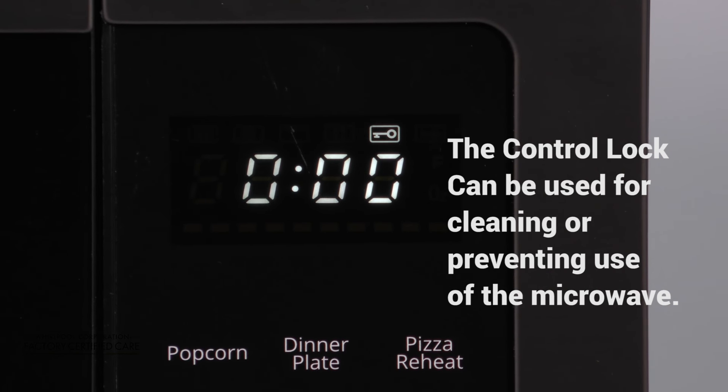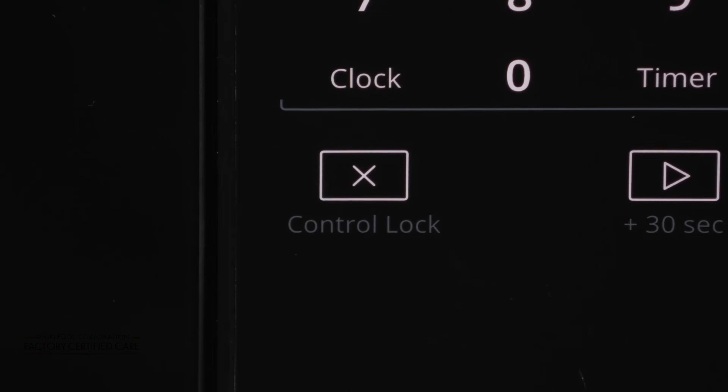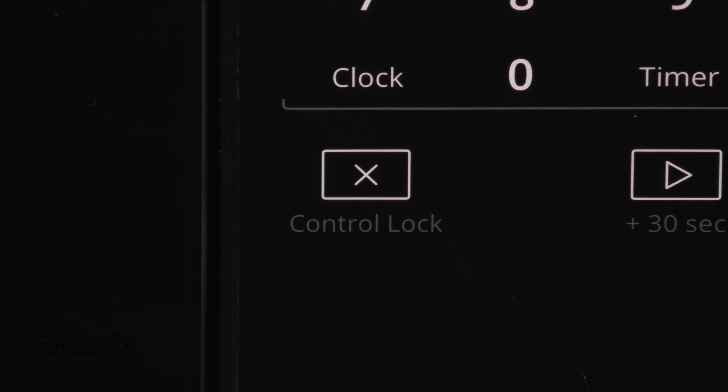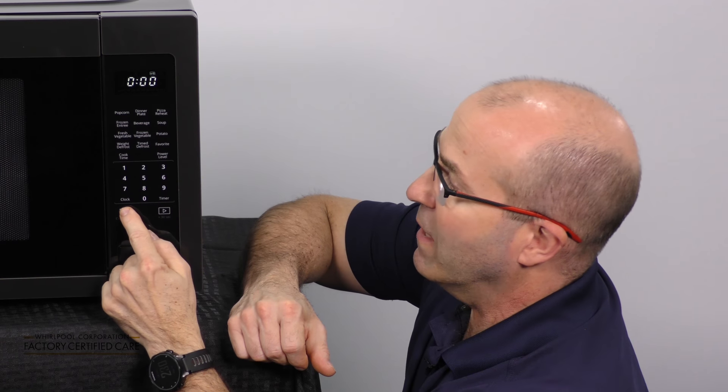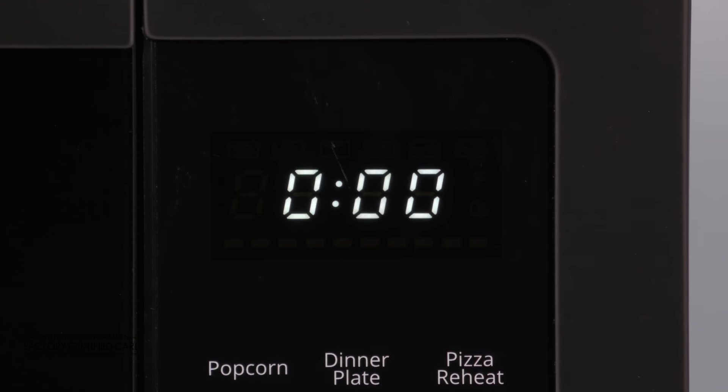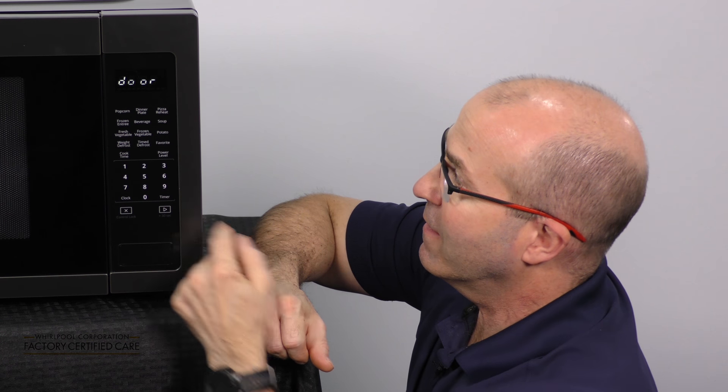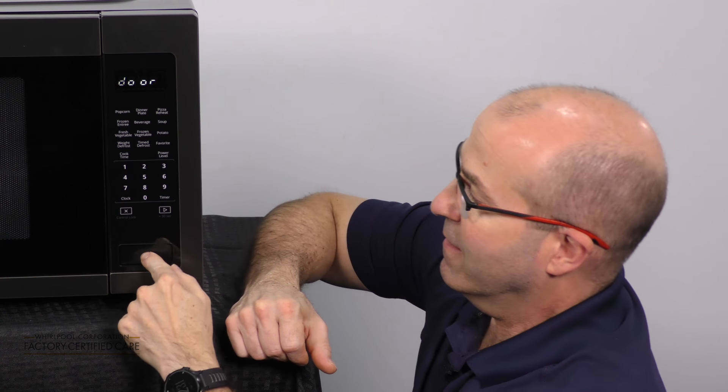It means that the pad is locked. Nothing will be activated. Now to unlock your microwave, you simply hold the X again for three seconds and now your microwave is ready to be used.